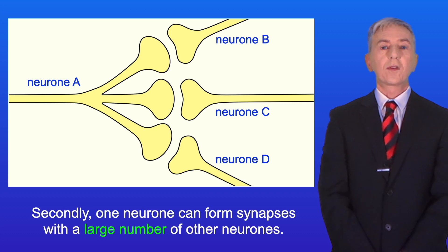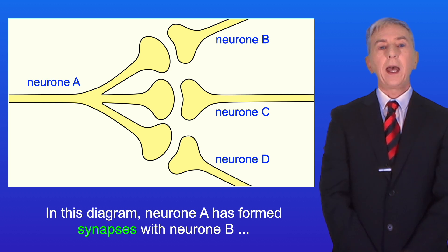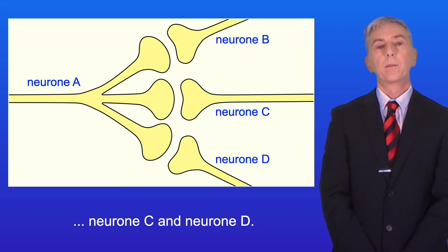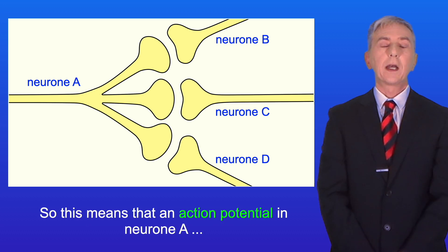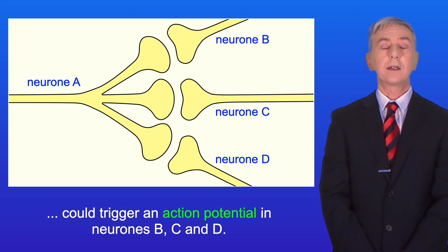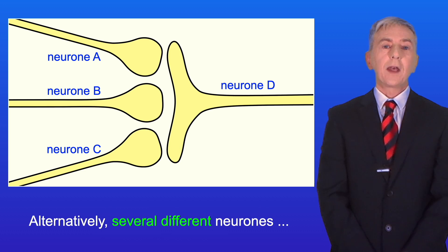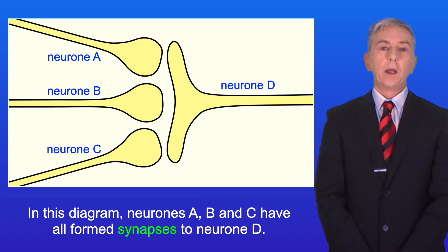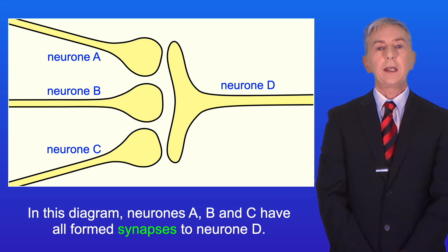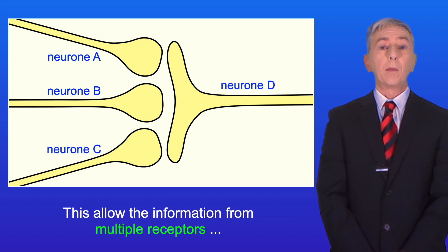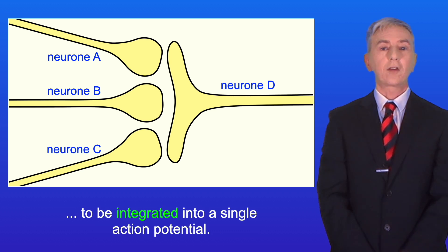Secondly, one neuron can form synapses with a large number of other neurons. In this diagram, neuron A has formed synapses with neuron B, neuron C and neuron D. So this means that an action potential in neuron A could trigger an action potential in neurons B, C and D. Alternatively, several different neurons can form synapses to a single neuron. In this diagram, neurons A, B and C have all formed synapses to neuron D. This allows the information from multiple receptors to be integrated into a single action potential.